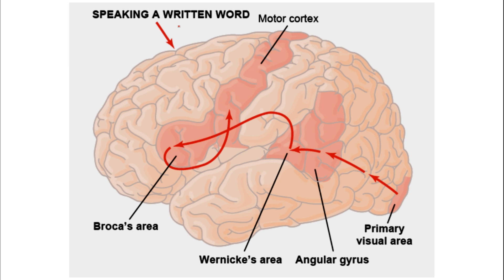Speaking a written word: whatever words we read from textbooks, visual information reaches the primary visual area in the occipital lobe. From there it goes to the angular gyrus where the meaning of the written word takes place. From the angular gyrus, information goes to the Wernicke's area, the main center for the sensory aspect of speech. From Wernicke's area, through the arcuate fasciculus, the information goes to Broca's area where word formation takes place, and from Broca's area to the motor cortex which executes spoken speech.